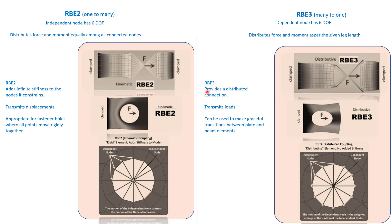For RPE 3, it provides a distributed connection and transmits loads. It can be used to make a graceful transition between plate and beam elements, and is best suited for shell elements. Usage is purely based on judgment, requirement, and application. In most cases I used RPE 2, and in scenarios where I tried RPE 3, RPE 2 still gave better results. Some scenarios may add more stiffness, some may give better results — you need to decide.